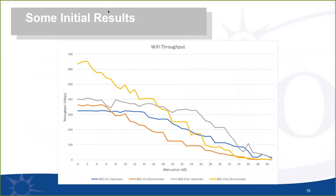Looking at some high-level initial results from the testing: this is a set of measurement data for a real device under test showing a comparison of 802.11ac versus 802.11n performance between the station and the AP as a function of attenuation or range. This is for a single orientation with no rotational aspect — just a quick run to show real throughput measurements made through the system.